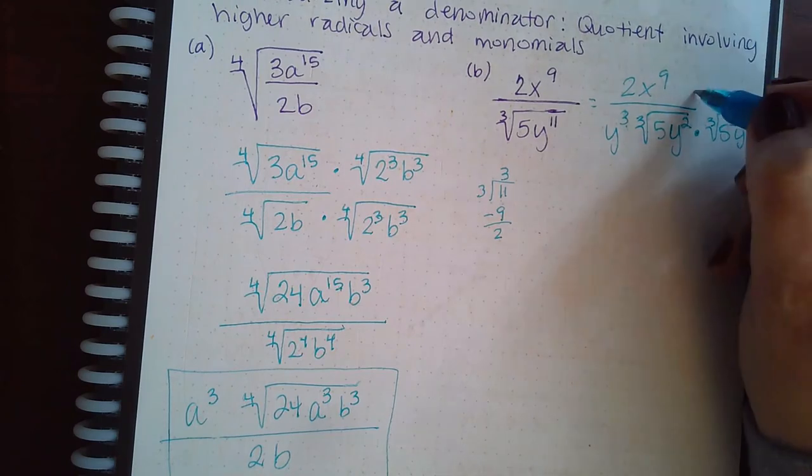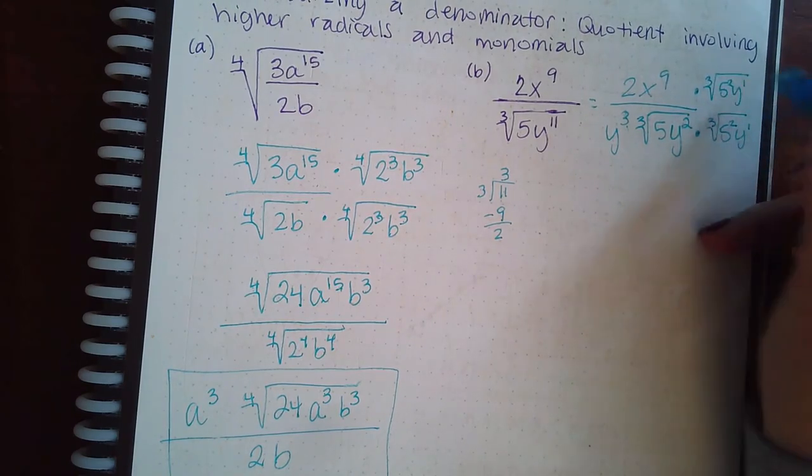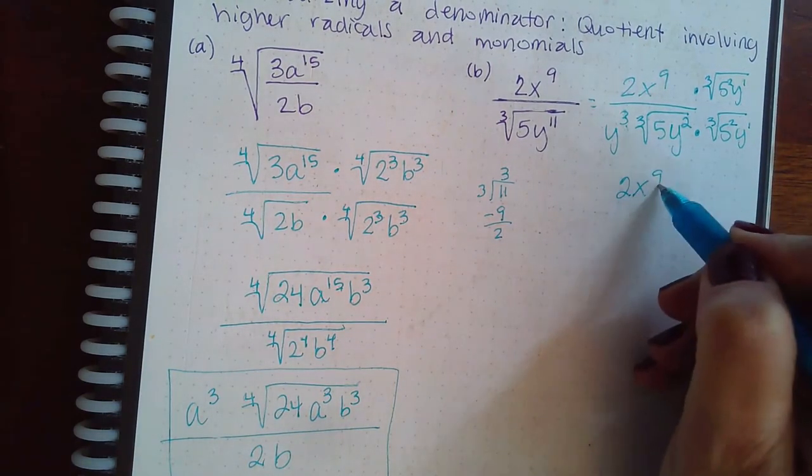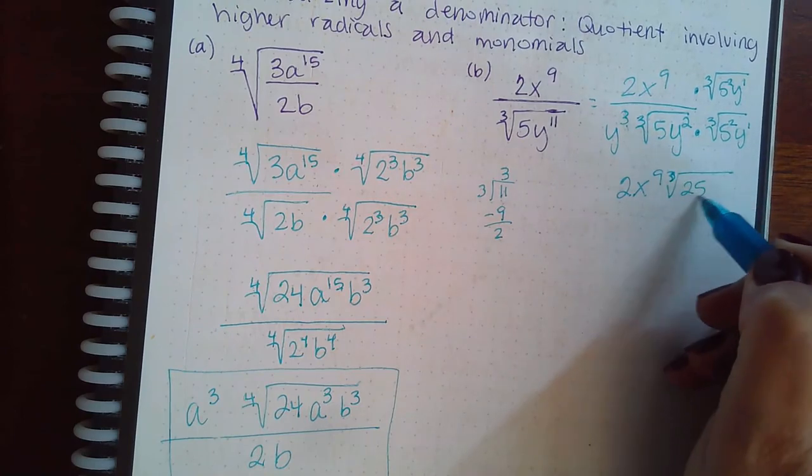So whatever I do to the bottom, I have to do the exact same thing to the top. And so what I end up with here is 2x to the 9th, and then the cube root of 25 and y.